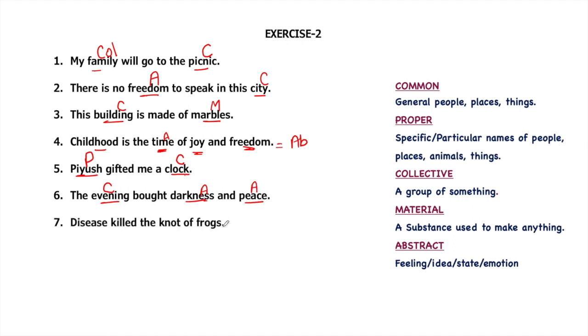Disease killed the knot of frogs. Disease means illness. It's a common noun. There can be many diseases. Knot is a group of frogs, so groups are called collective nouns. And frogs can be many, so it will be a common noun.